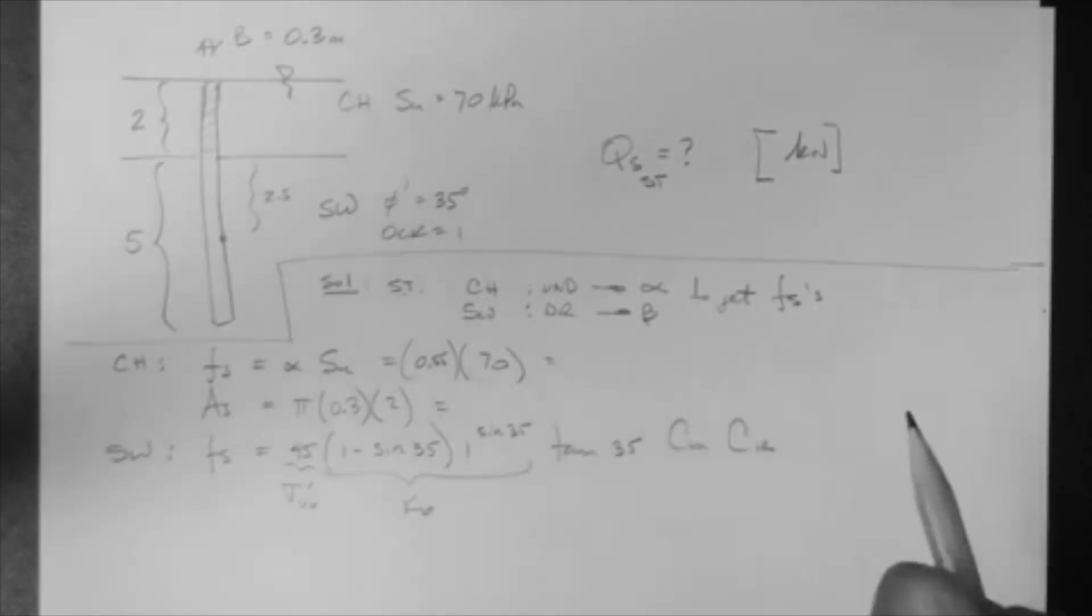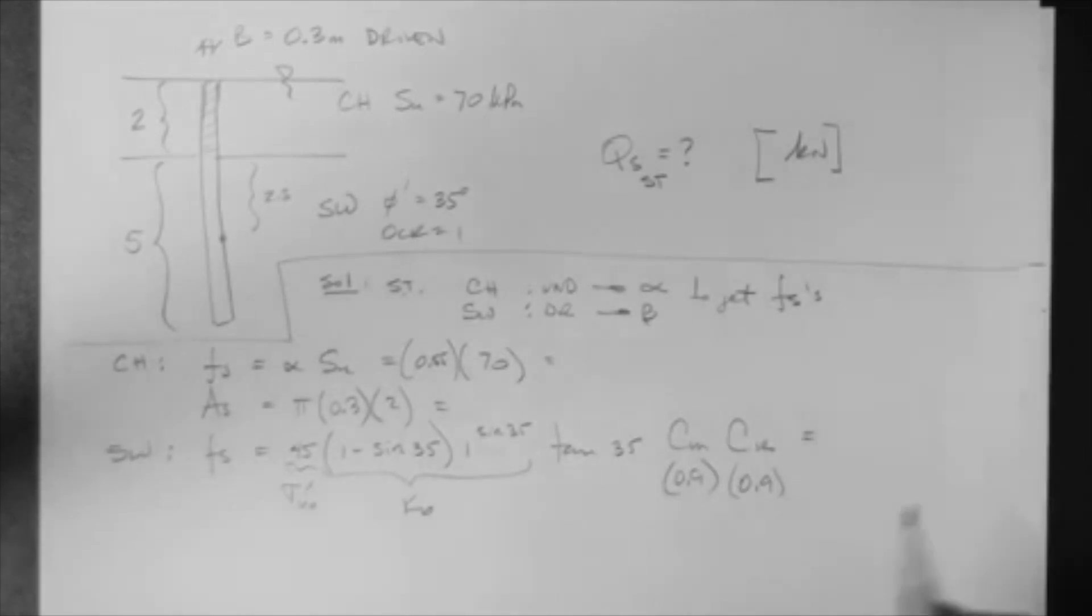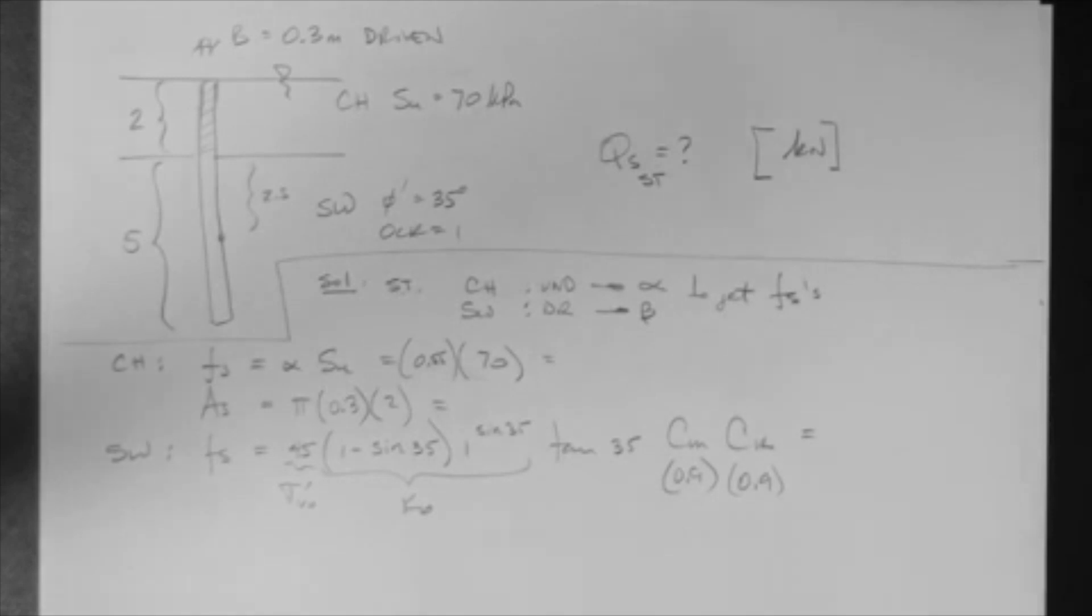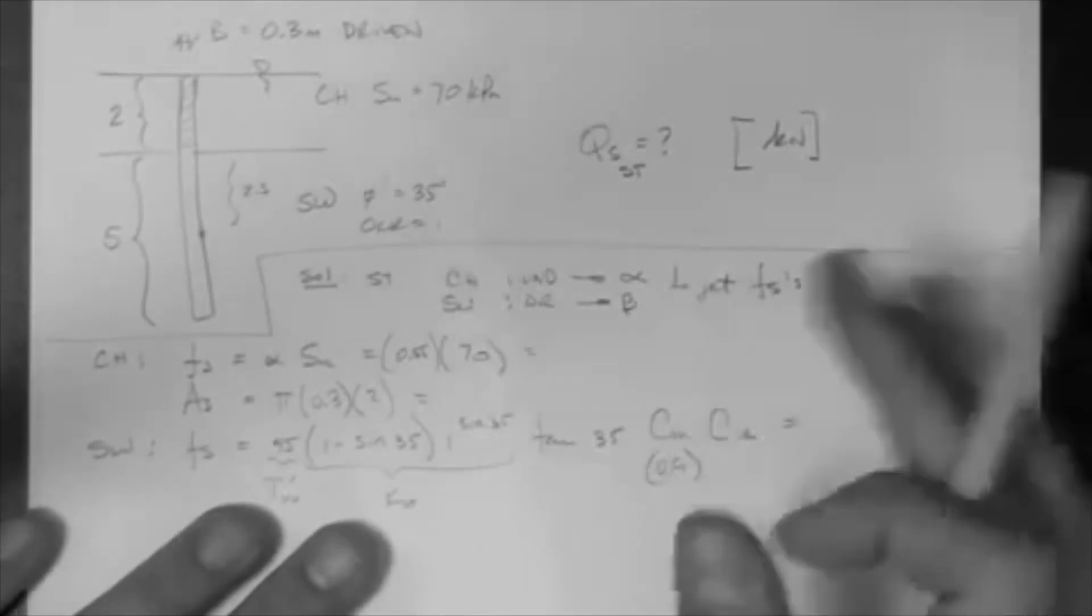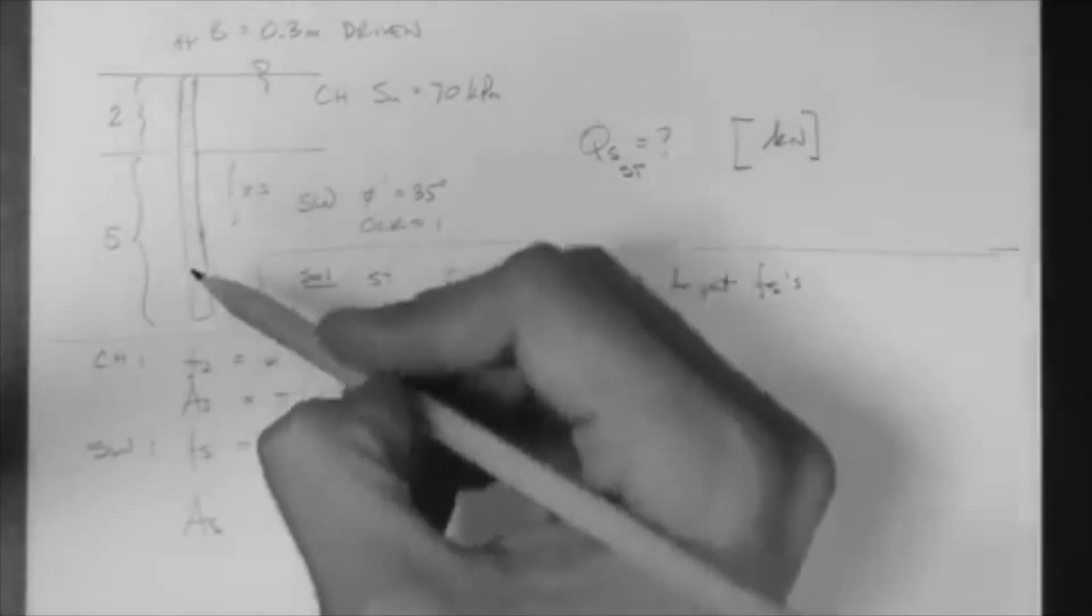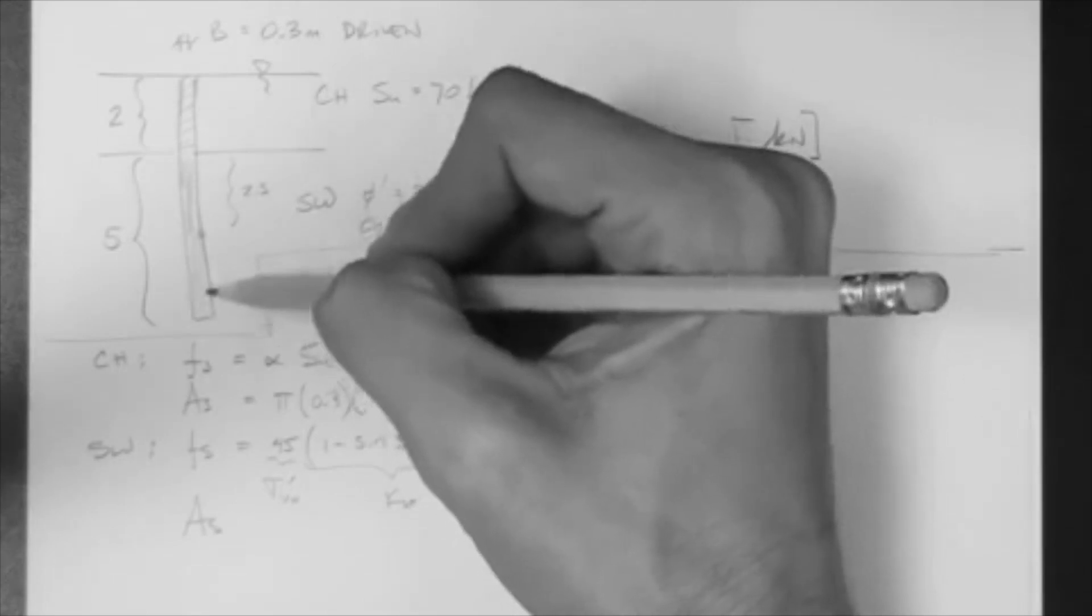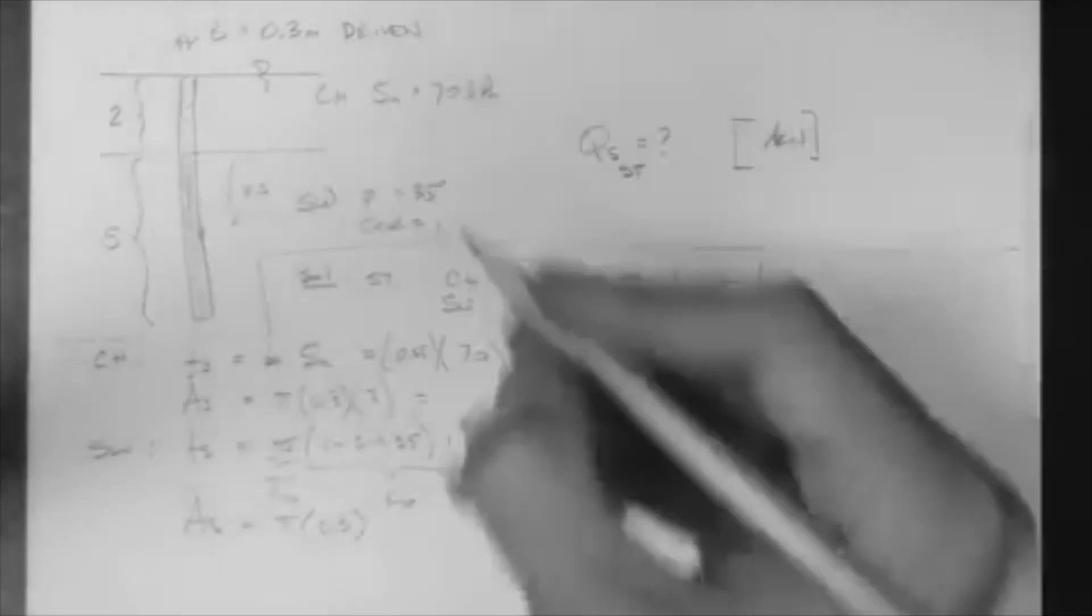So let's say this is a driven pile. If it's a driven pile, then it's low displacement. Therefore, this is 0.9, and it's smooth concrete because it's driven. Let me check. No, driven small displacement, the value of CK is 1. Check your reader and you'll see that. And the AS is the surface area of the segment that touches the sand, right? This part. So this is pi B times the length of the segment, which is 5.